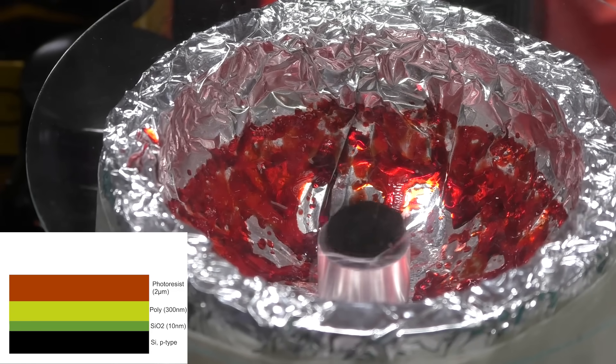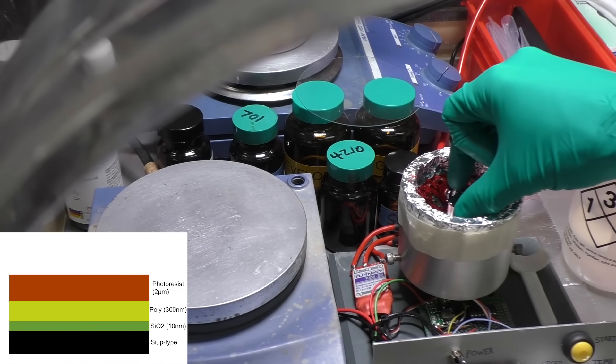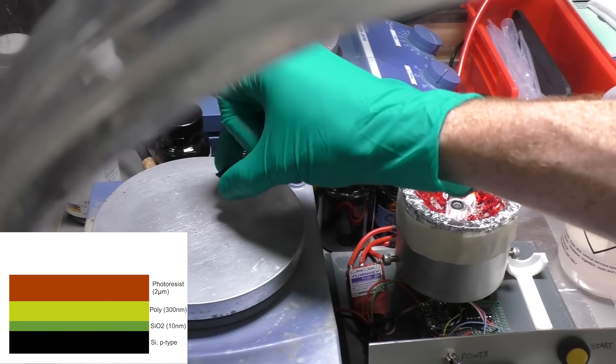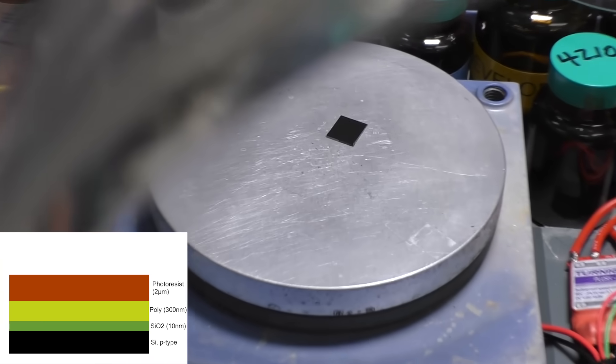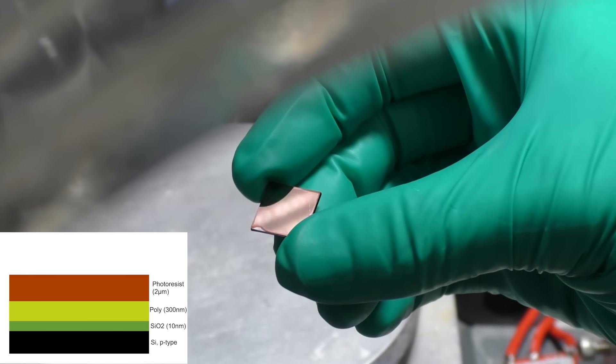After all the excess photoresist has been spun off, it's dried on a hot plate at about 95 degrees C for one minute. This drives off the rest of the solvents and leaves us with a solid film. The result is a beautiful looking and uniform covering of the whole wafer.